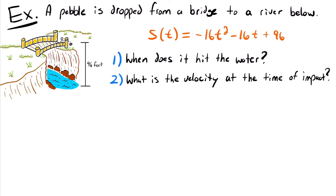Let's look at one more example — a little more involved. A pebble is dropped from a bridge to a river below, and we are given a position function. From our diagram showing a bridge and the river below, the pebble is dropped from a height of 96 feet, and time is in seconds. The problem asks two things: first, when does the pebble hit the water? And second, what is the velocity at the time of impact?